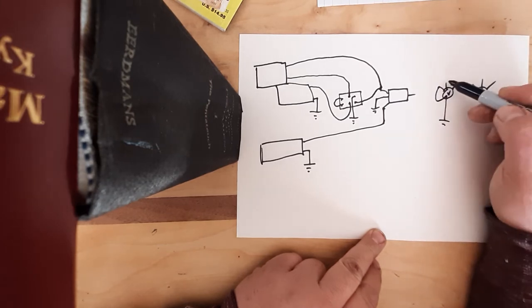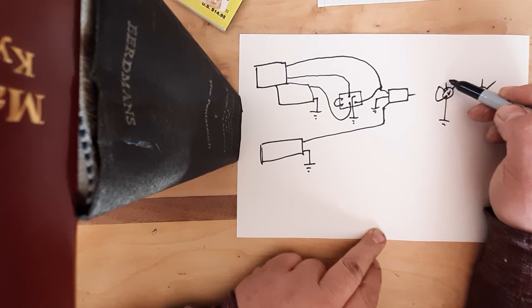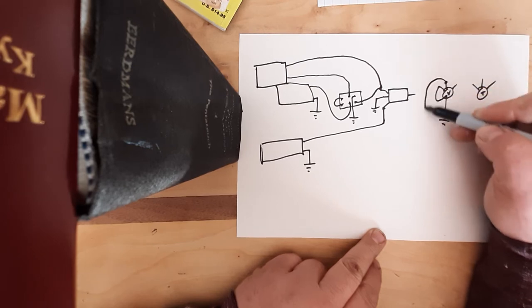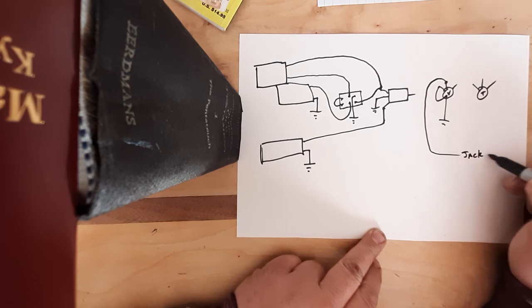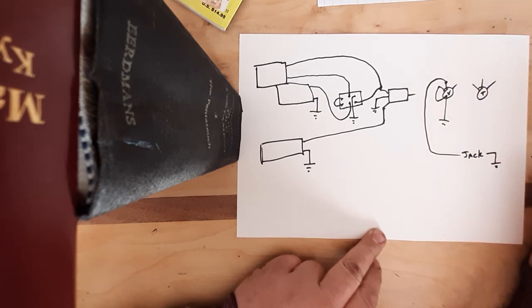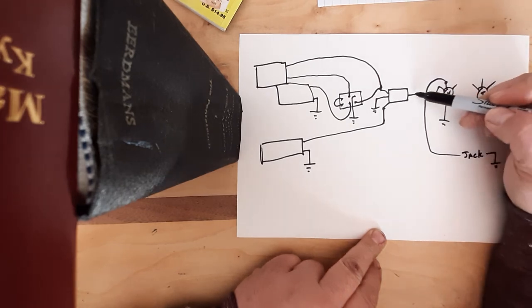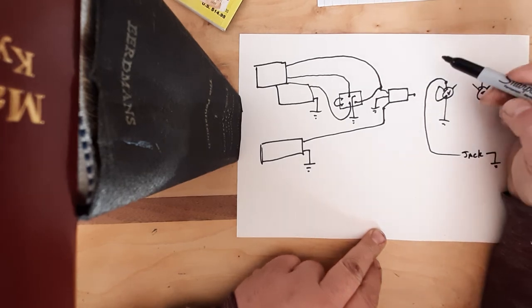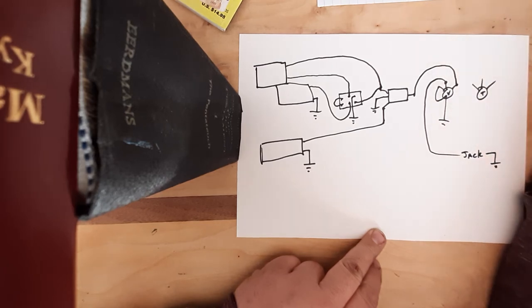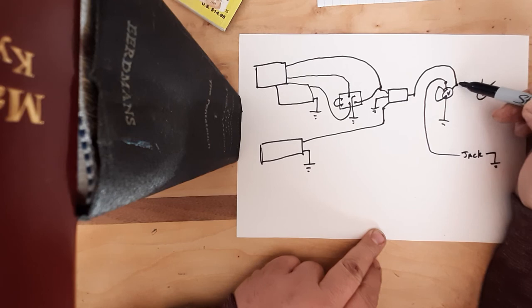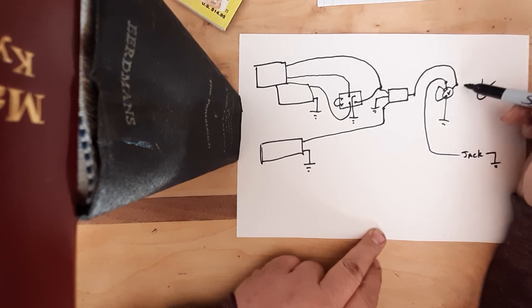This middle lug is going to go to the jack, and the other side of the jack obviously goes to ground. And then the output of our three-way switch right here, it comes over here, it goes onto our volume.